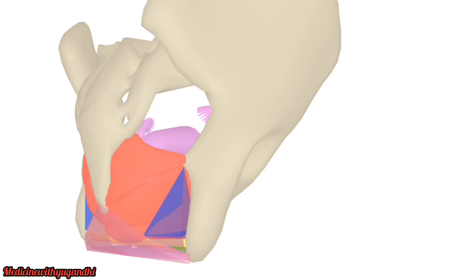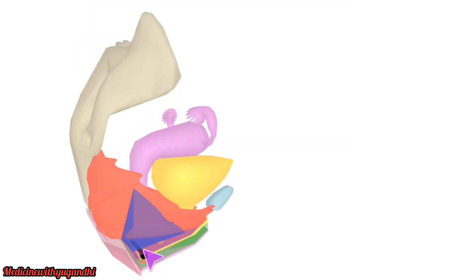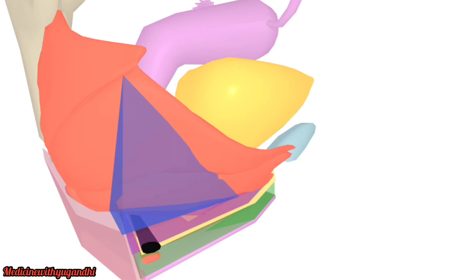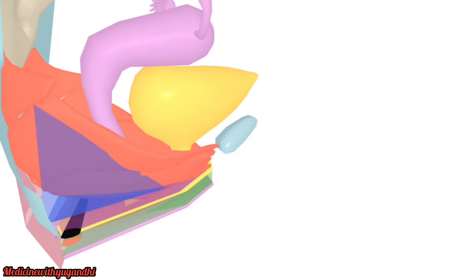Removing the sacrotuberous ligament, you can see the ischioanal fossa. The pudendal canal is located on the lateral wall of the ischioanal fossa. It extends from the posterior part of the perineal membrane to the lesser sciatic notch.